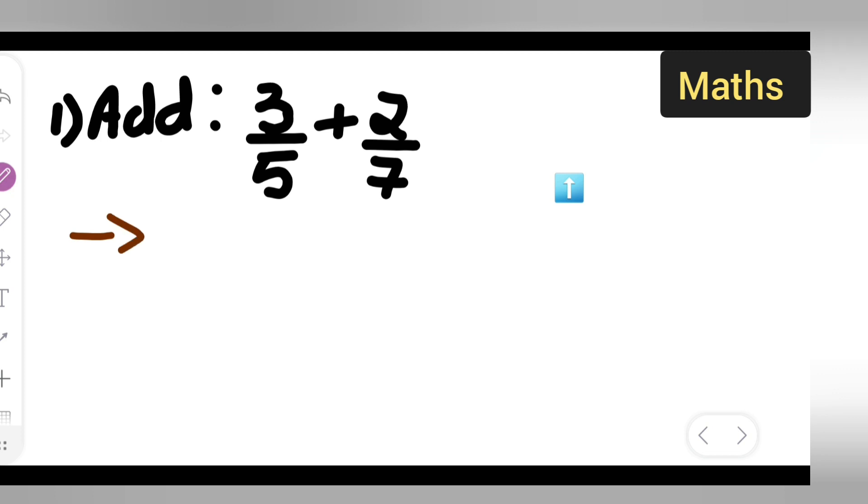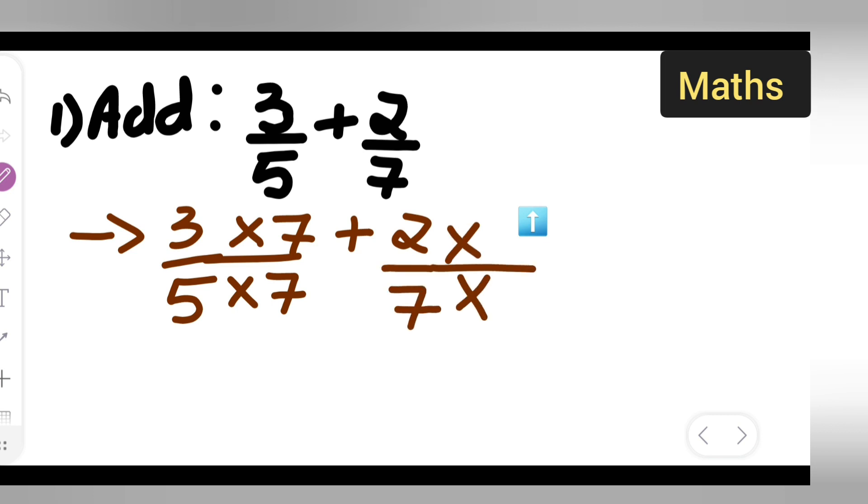Here what I'll have to do is first take down this 3 upon 5 multiplied with the denominator of the other, which is 7. This is like cross multiplication. Then write plus 2 upon 7, multiplying it with the denominator of this, which is 5.